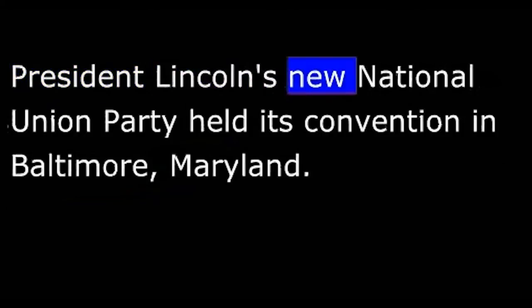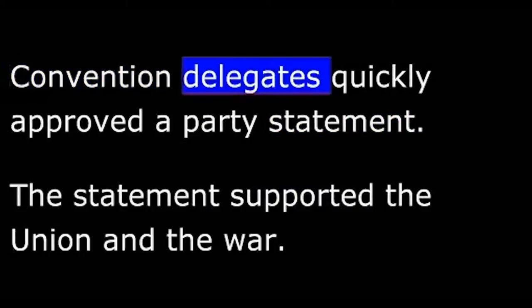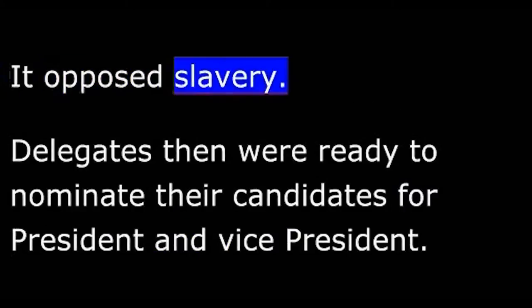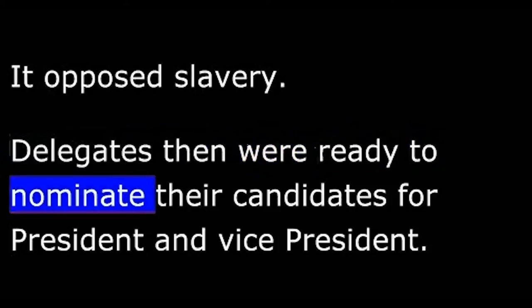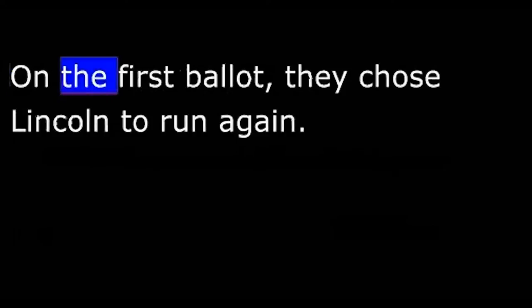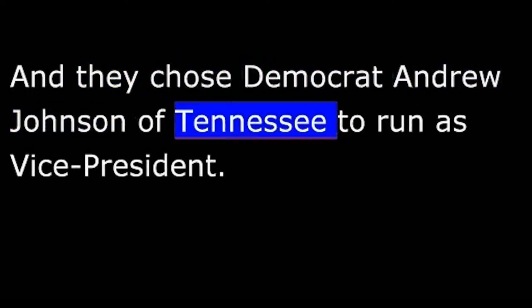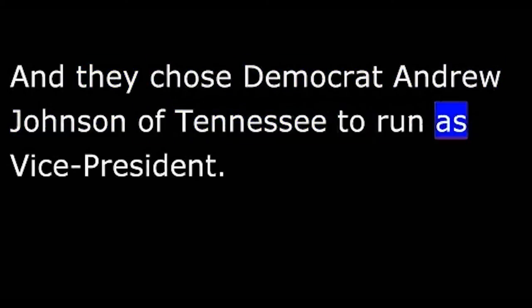President Lincoln's new National Union Party held its convention in Baltimore, Maryland. Convention delegates quickly approved a party statement that supported the Union and the war, and opposed slavery. Delegates then nominated their candidates for president and vice president. On the first ballot, they chose Lincoln to run again, and they chose Democrat Andrew Johnson of Tennessee to run as vice president.